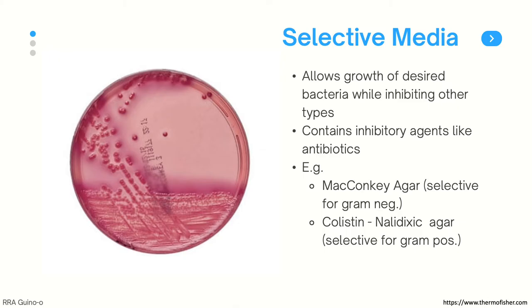Next we have selective media. This kind of media allows for growth of desired bacteria while inhibiting other types, and it achieves this because it contains inhibitory agents such as antibiotics. Some common examples you will probably encounter in the laboratory are MacConkey agar, which is the plate you see on the left. This is selective for gram-negative bacteria, and it achieves this by containing crystal violet and bile salts, which are usually inhibitory against gram-positive bacteria.